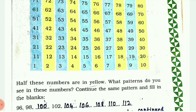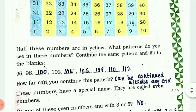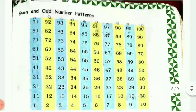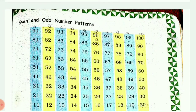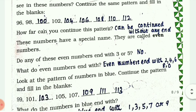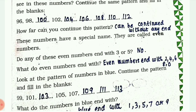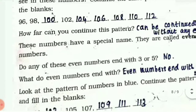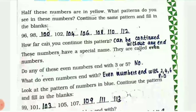So 96, 98, 100 - they have continued writing even numbers. How far can you continue this pattern? This pattern can be continued without any end. These numbers have a special name - they are called even numbers. Do any of these numbers end with 3 or 5? No. Even numbers end with 0, 2, 4, 6, or 8.